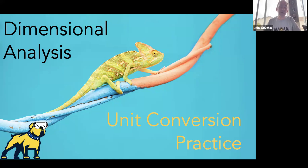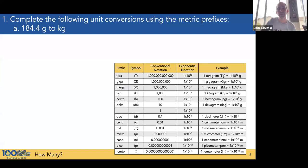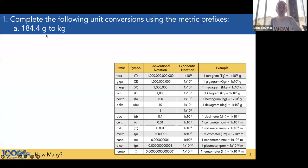Welcome back. Hopefully you've had a chance to go through the 'how many' assignment and get some practice with unit conversions. Let's see if your answers agree with mine. Complete the following unit conversion using the metric prefixes: 184.4 grams to kilograms. We're going to be using the relationship between kilo and its base unit.